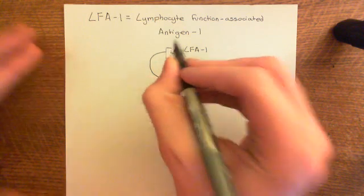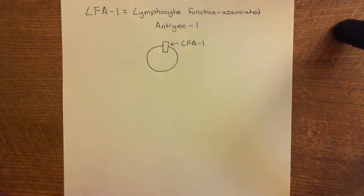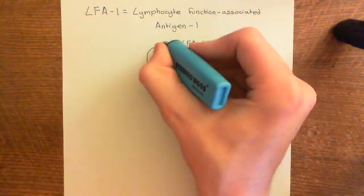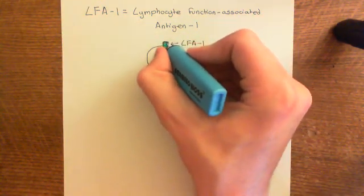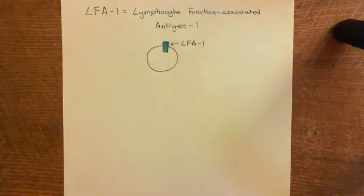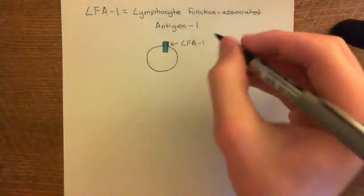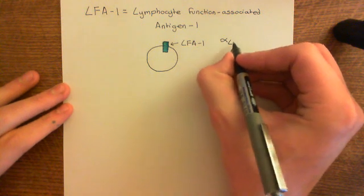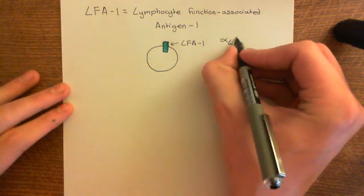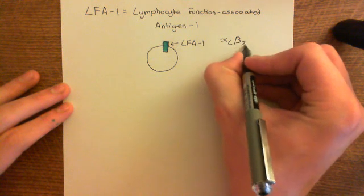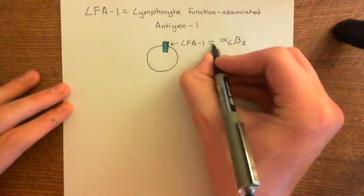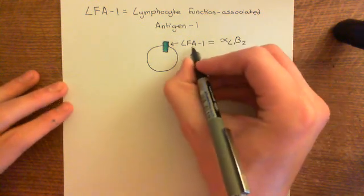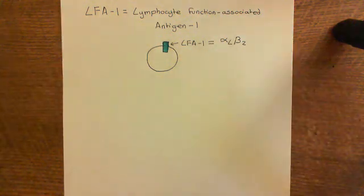Integrins are dimers — even though drawn as a rectangle, they are made up of two subunits. The subunit composition of LFA-1 is the alpha L subunit as the alpha subunit and beta 2 as the beta subunit — making it the alpha L beta 2 integrin.